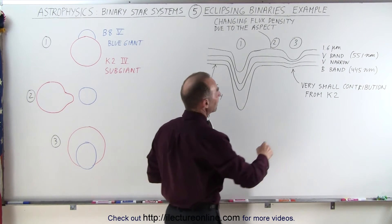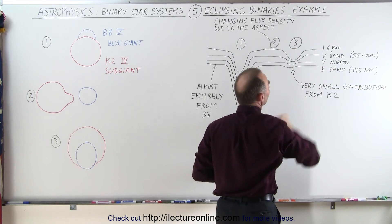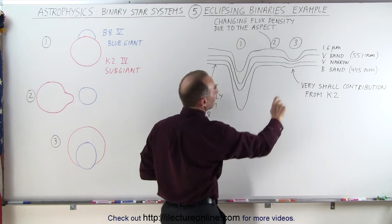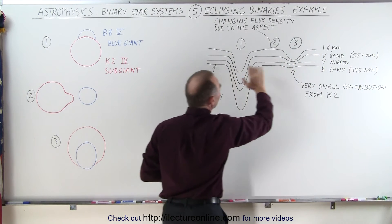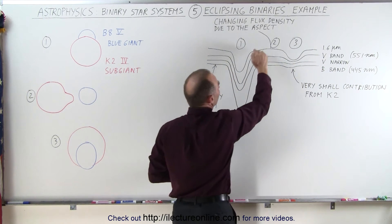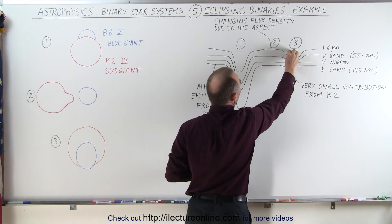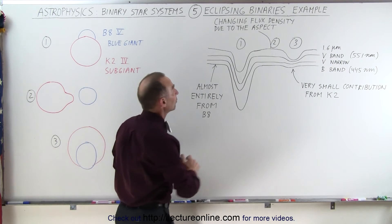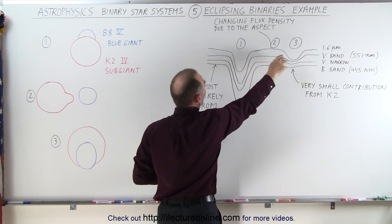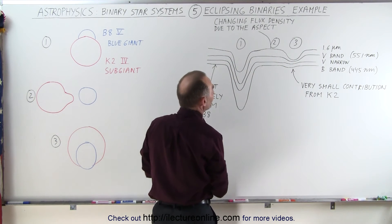Also notice when we look at the various bands: we have the 1.6 micrometer band, the V band, the V narrow band, and the B band. Notice when we look at the 1.6 micrometer band — that's in the infrared — we have a proportionally large dip in the curve, because a lot of that 1.6 micrometer light comes from the red subgiant, and proportionally to the blue giant you can see there's a big diminishing relatively speaking.